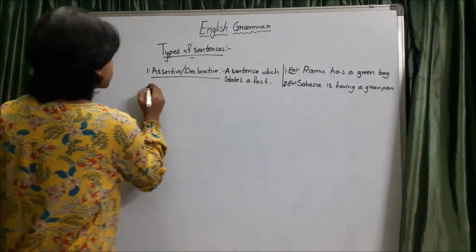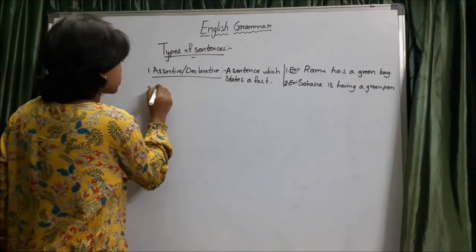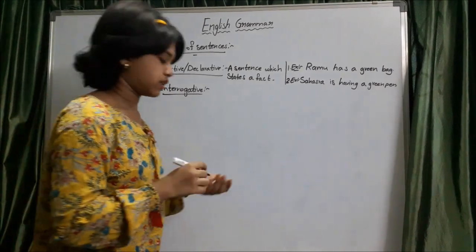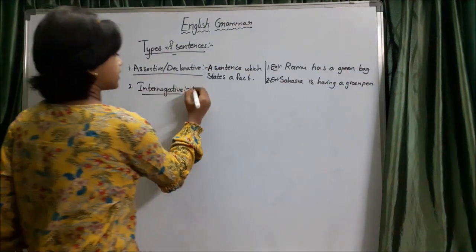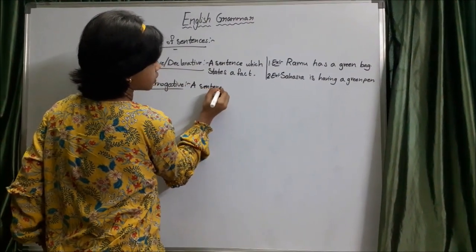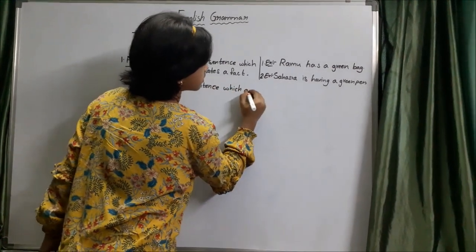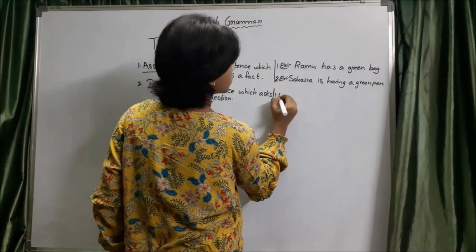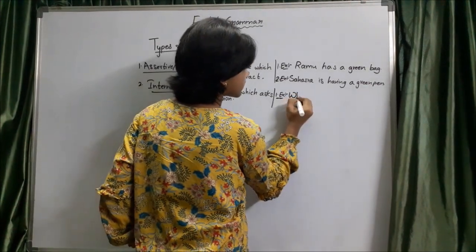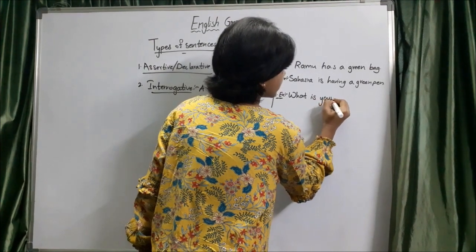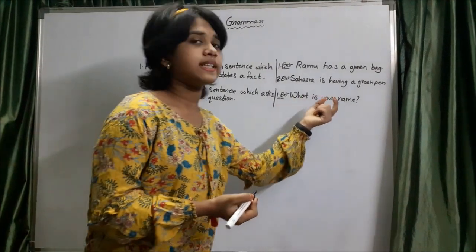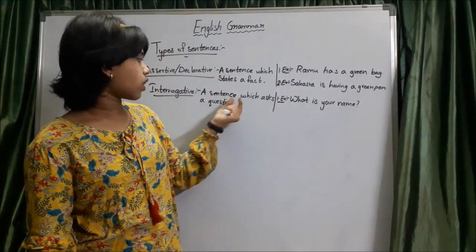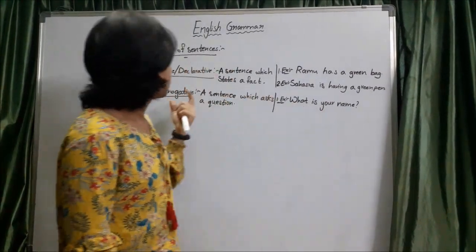Now let's write the second type. The second type is interrogative. What is an interrogative sentence? A sentence which asks a question. Let us write an example for this also. The example is: What is your name? In this sentence, the first person is asking the other person. An interrogative sentence always asks a question, so this is a question and it comes under an interrogative sentence.